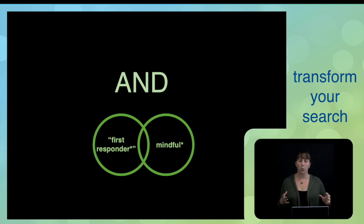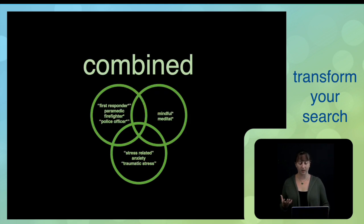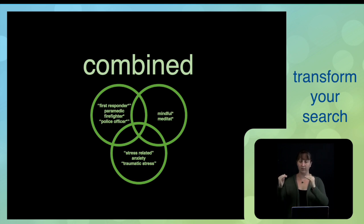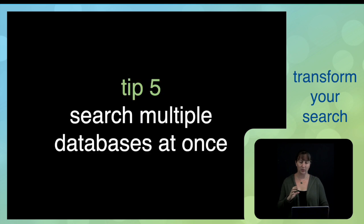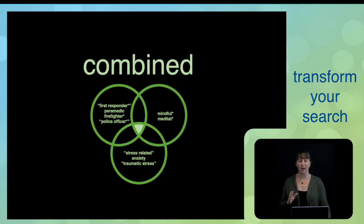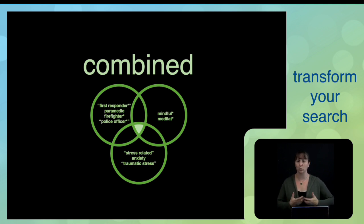Where these two Boolean operators AND and OR become really fantastic is when you bring them all together into a single search. For example: first responder OR paramedic OR firefighter OR police officer AND mindfulness AND meditation AND stress-related anxiety OR traumatic stress. When you do that, you capture just this nice piece in the center of the Venn diagram — any item in the database that uses at least one term from each of those three circles, which is basically any item relevant to your research question.